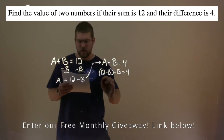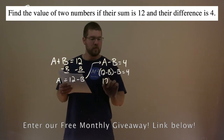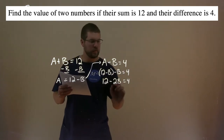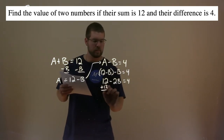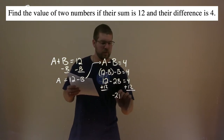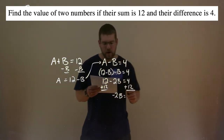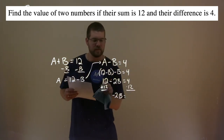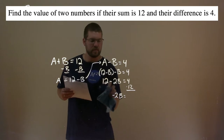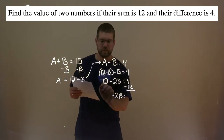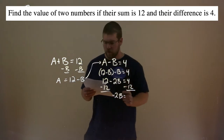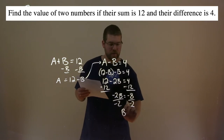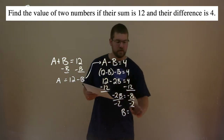Simplify that. Subtracting 12 from both sides — negative 2B is equal to 4 minus 12, which comes out to be negative 8. Divide both sides by negative 2, and B becomes negative 8 divided by negative 2, which is positive 4.